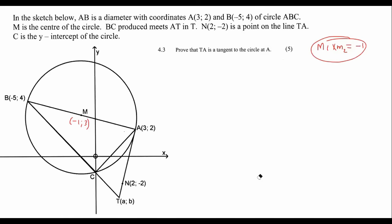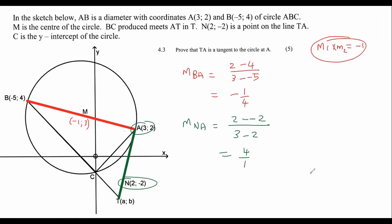So we're going to take the first line, the line BA, and work out the gradient of BA. That's Y values first, so 2 minus 4 over 3 minus minus 5. If we plug that in, we get negative a quarter. Then we're going to find the gradient of the supposedly tangent, which would be NA. That's 2 minus minus 2 over 3 minus 2. If you work that out, you'll end up with four over one. Then we multiply their gradients together: negative a quarter multiplied by four over one, and that gives you negative one. Fantastic.